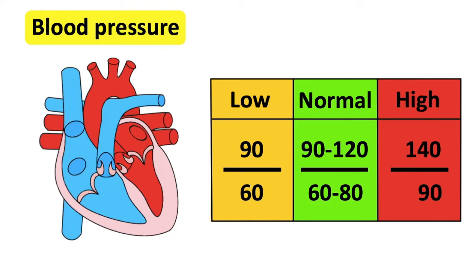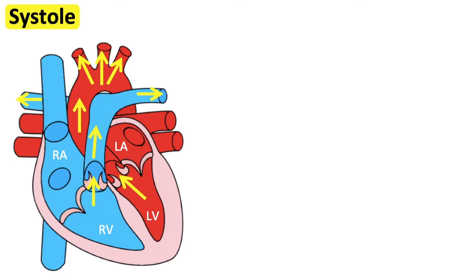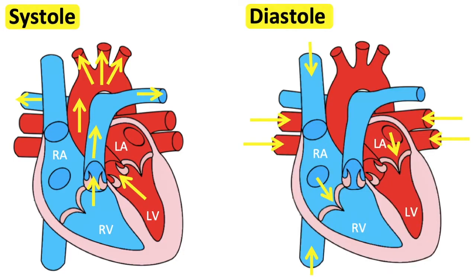Blood pressure is a measure of the force that the heart uses in order to pump blood around the body. We measure two values: systolic pressure and diastolic pressure. Remember, systole is when the heart contracts and pushes blood out. Diastole is when the heart relaxes and fills with blood.